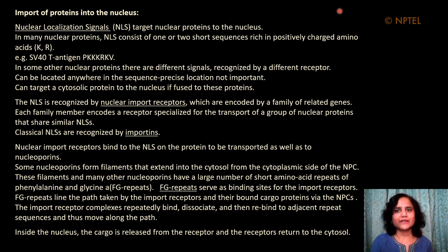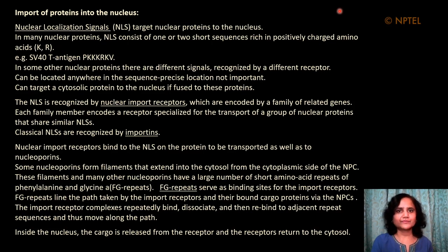The FG repeats line the path taken by the import receptors and their bound cargo proteins as they move via the NPCs. The import receptor complexes repeatedly bind, dissociate, and rebind to adjacent repeat sequences, thus moving along the particular path within the channel of the nuclear pore complex. Inside the nucleus the cargo is released from the receptor, and the receptors can also return to the cytosol.